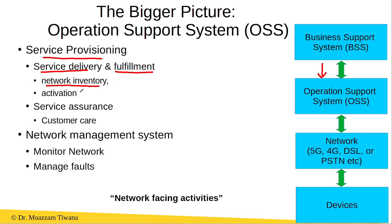That means the service is activated in the network. In order to activate this service, the operations support system sends a message to the network, and this message contains the parameters that are required for the activation of this service.